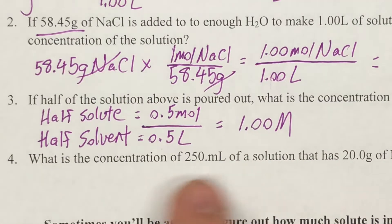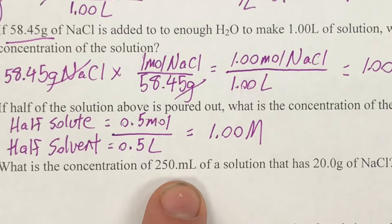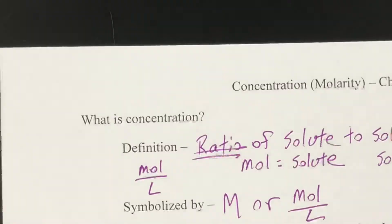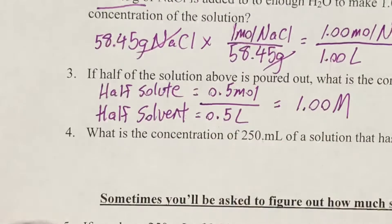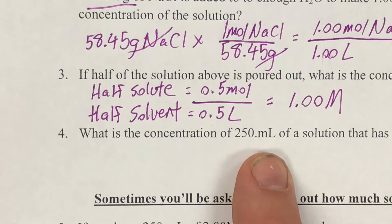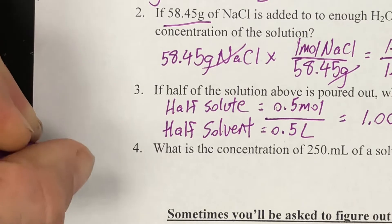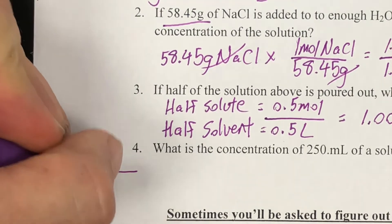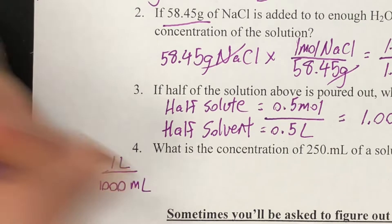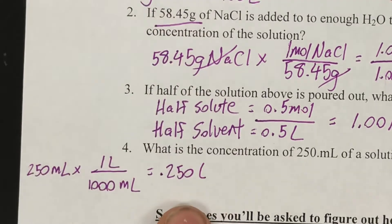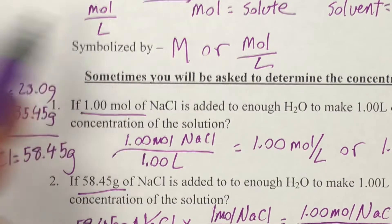Next question: we're still dealing with salt and water, but now I've got 250 milliliters and 20 grams. Remember, we need moles over liters. If they give us milliliters, we need to convert that first. So 250 mL: one liter equals 1,000 mL, so 250 divided by 1,000 is 0.250 liters. The bottom of our ratio is going to be 0.250.